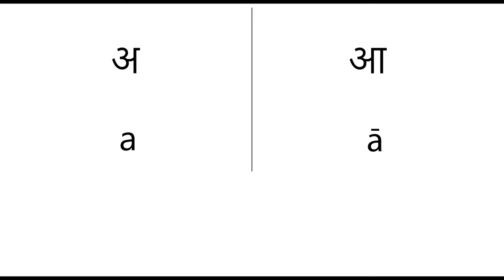Each vowel has a shorter version — as you can see on this slide, it's 'a' — and a longer version, which is usually shown with a line on top, which in this slide is 'ā'.